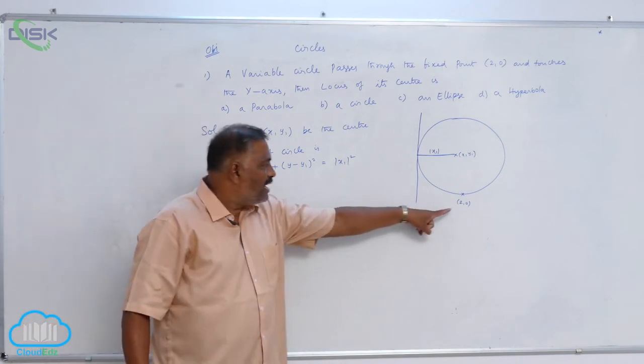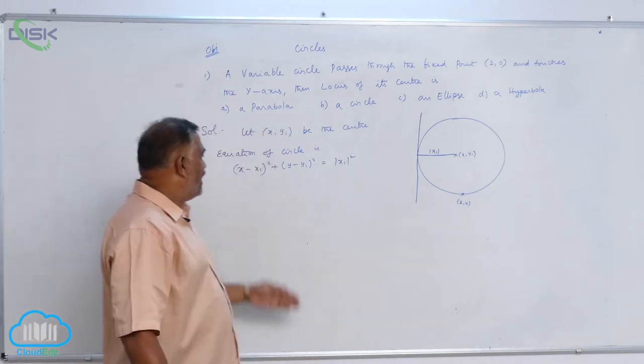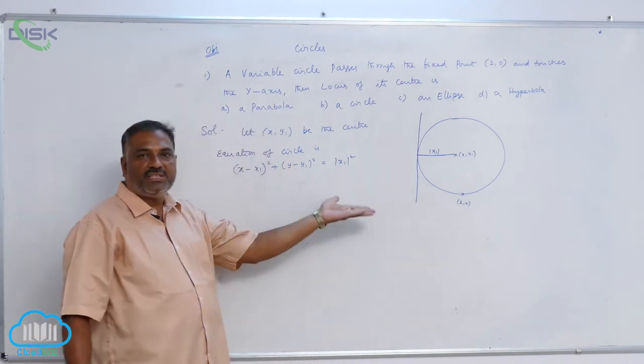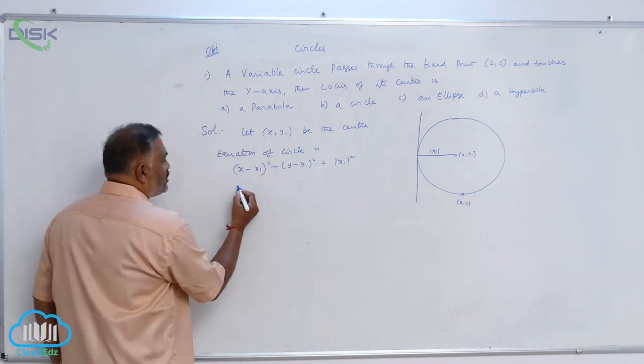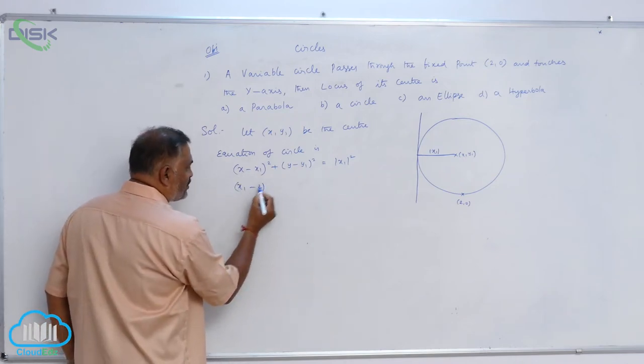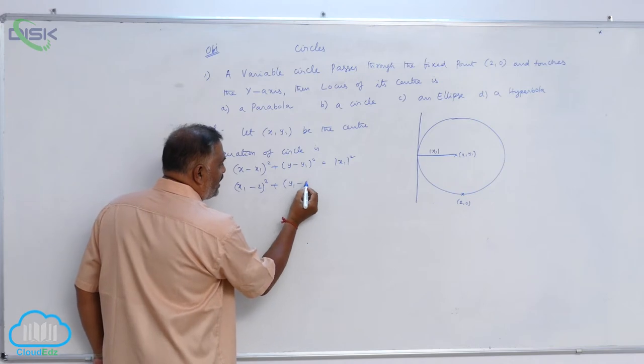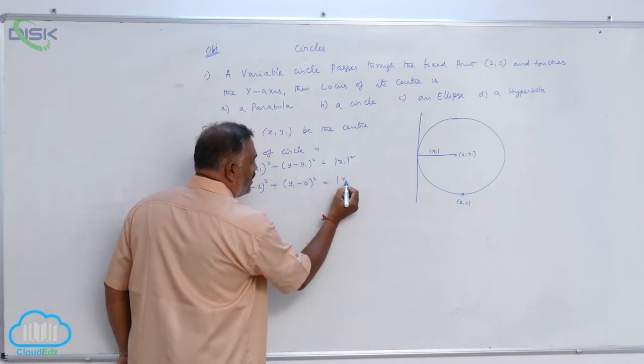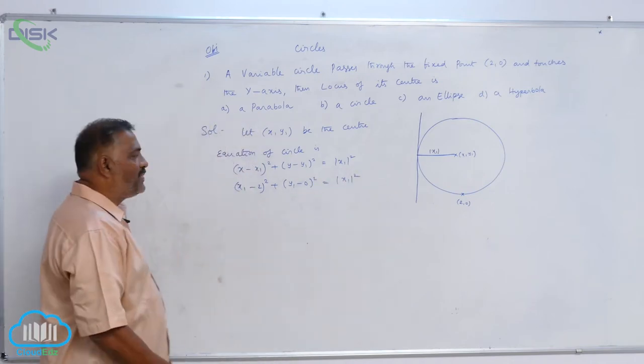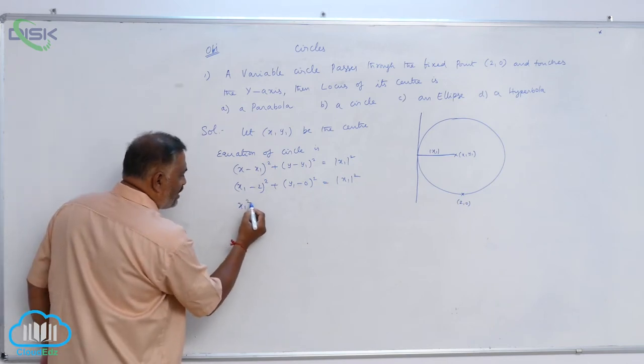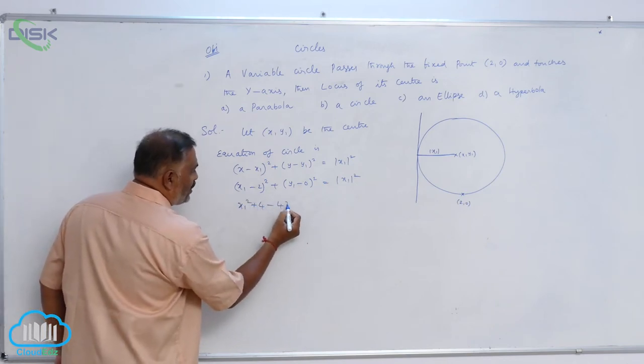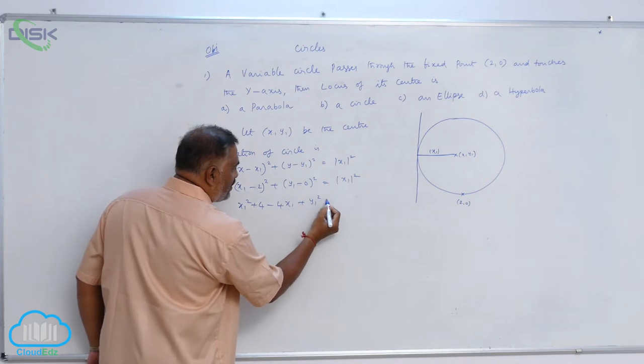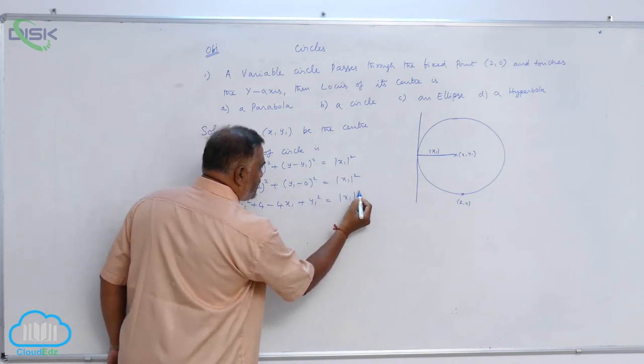Now, since circle passes through (2, 0), in place of (x, y), you can substitute (2, 0). So, (x1 - 2)² + (y1 - 0)² = (mod x1)². So, x1² + 4 - 4x1 + y1² = (mod x1)².